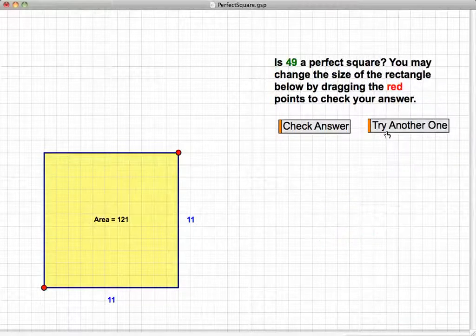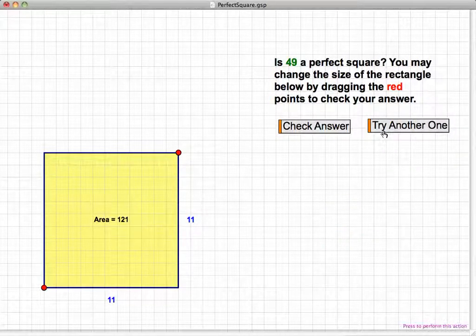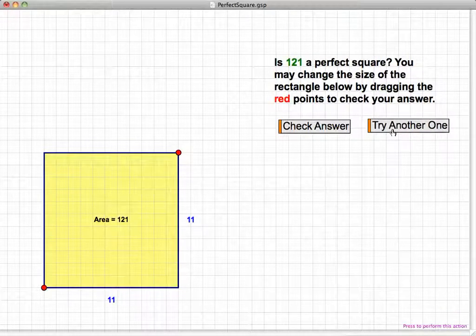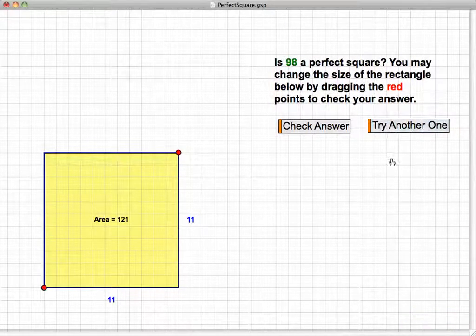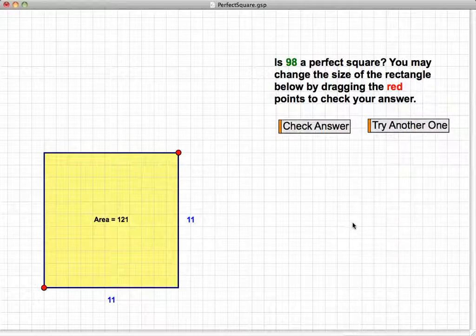And then try another one, we'll try another one. And this will generate any number of values that are all either perfect squares or not. And so, for example, 98—is 98 a perfect square?